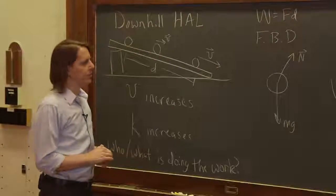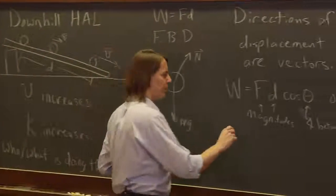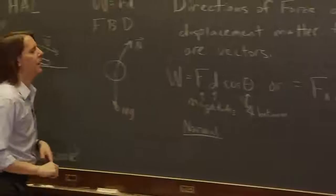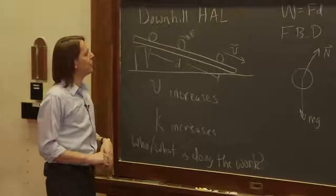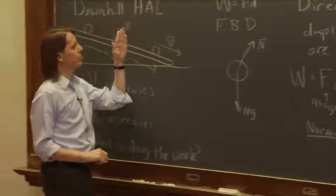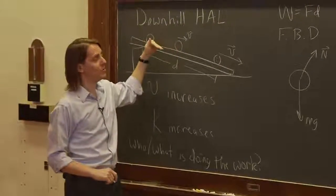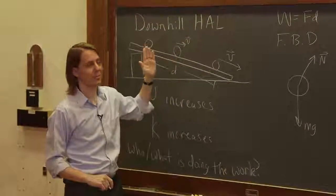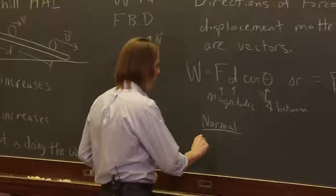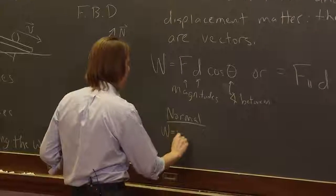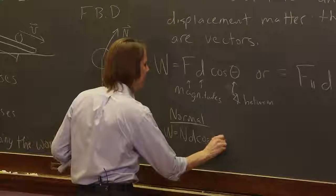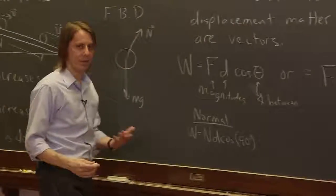Okay, so now we can look at them and figure out which one, how much work do they do? Let's look at the normal force. Let's see. For the normal force, the direction is always perpendicular to the surface. But the motion is always along the surface. So that's by definition. That's what the normal force is. It always points normal to the surface. So it's always going to be the normal force times the distance times the cosine. And that angle is always 90 by definition.